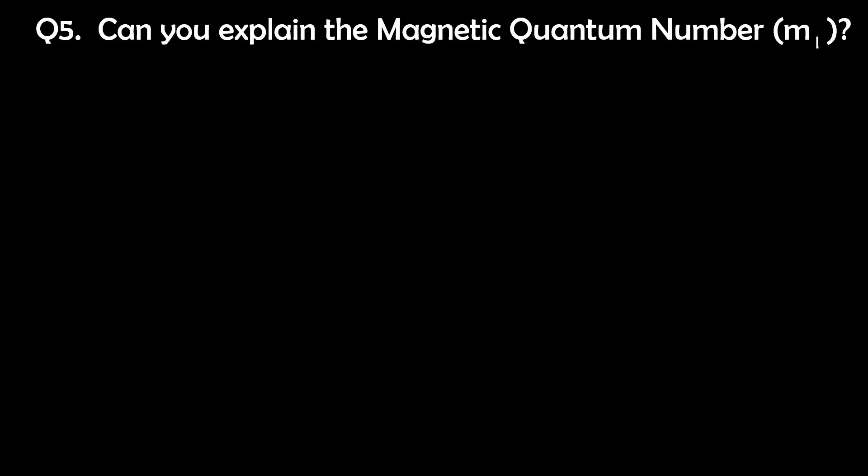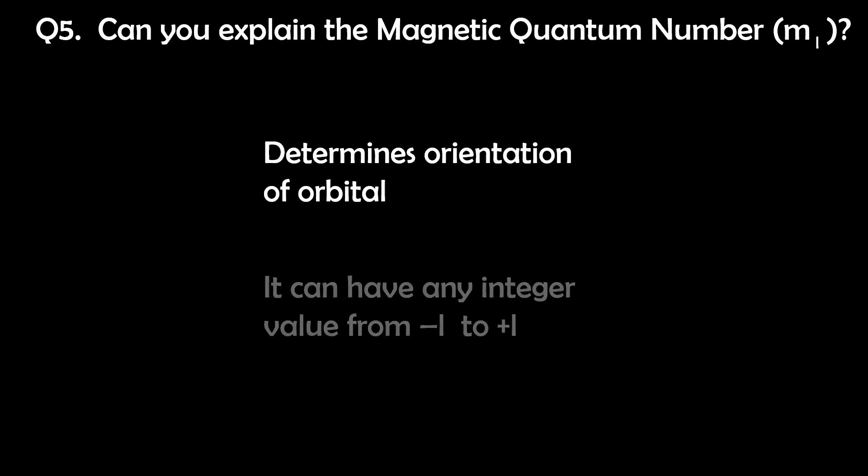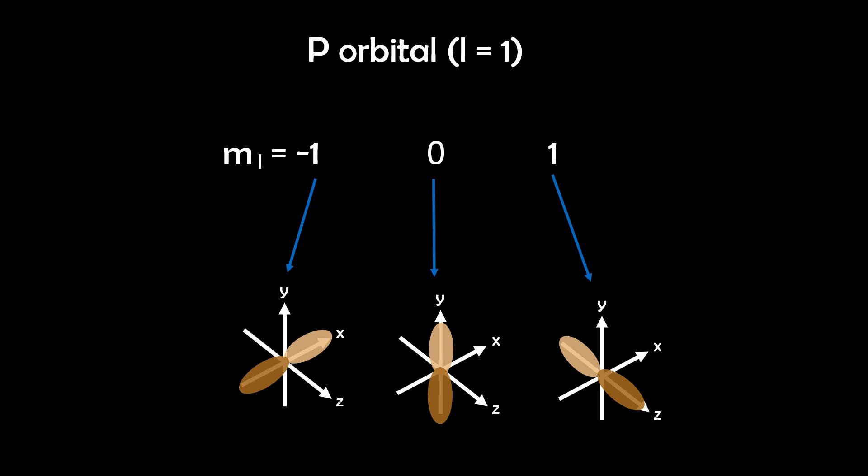Question 5. Can you explain the magnetic quantum number M sub L? The magnetic quantum number M sub L defines the orientation of an orbital in space. Its values range from negative L to positive L, including 0. For example, if L is 1 or the P orbital, M sub L can be negative 1, 0, or positive 1, indicating the three different orientations of the P orbital.